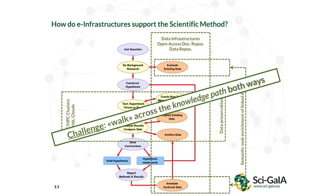The challenge is to walk across this knowledge path both ways. You usually start from the top and go down — reviewing the literature, running experiments, writing papers. But we would like to go the other way around: starting from a paper, being able to access the connected data, software, algorithm, and even the possibility to rerun the experiment on a cloud infrastructure. The very challenging part is going up and down in this knowledge path.